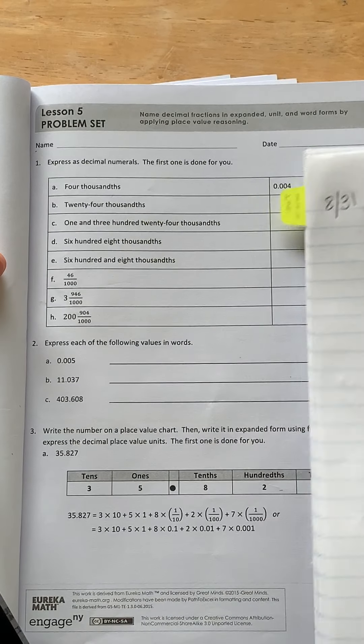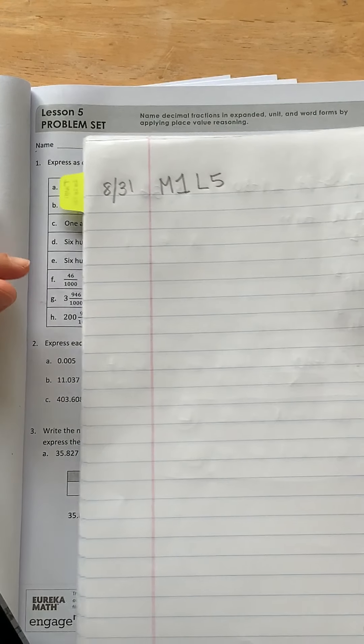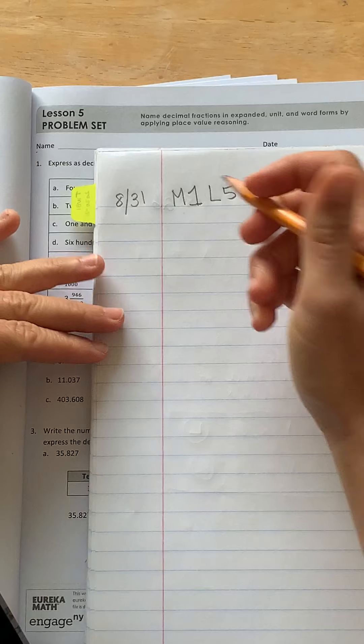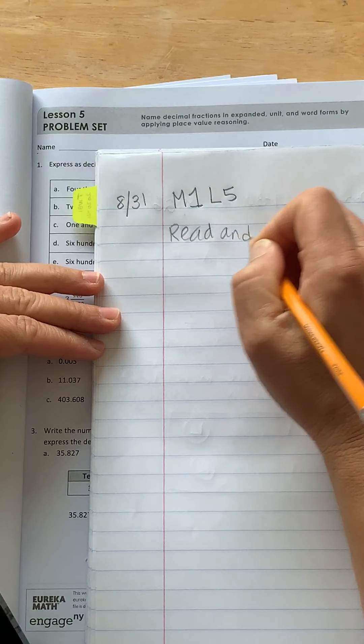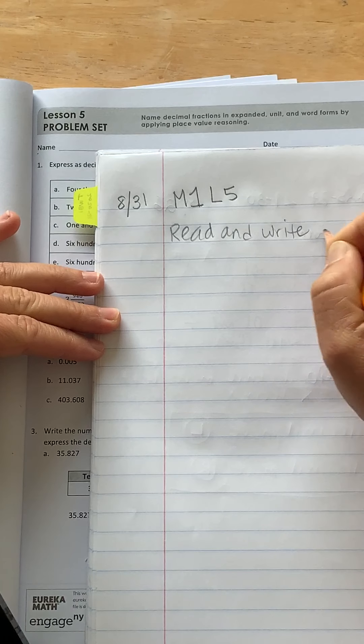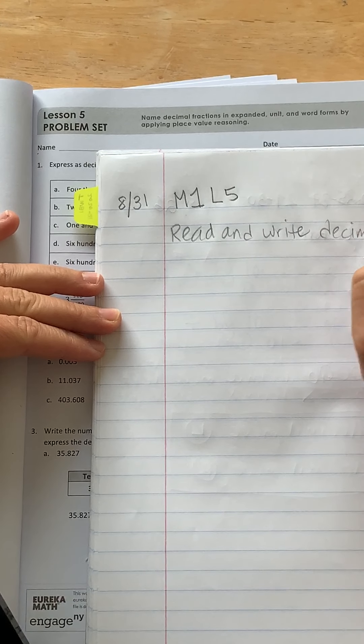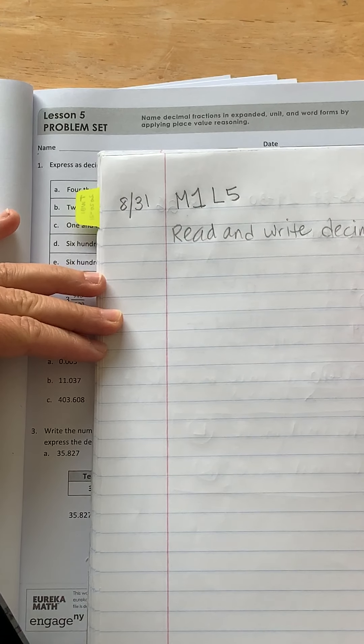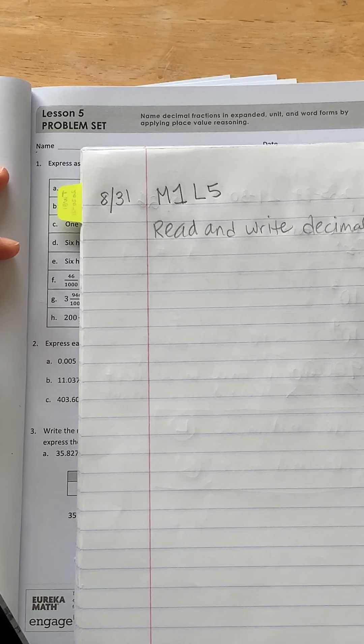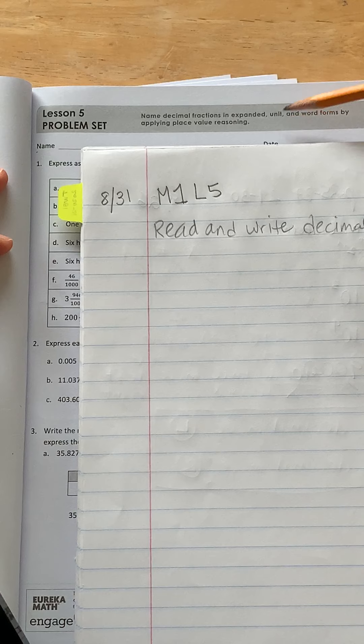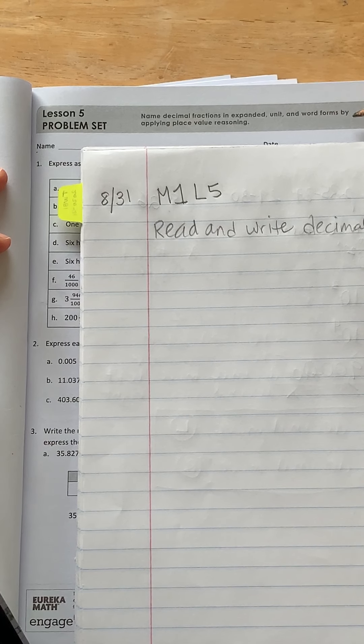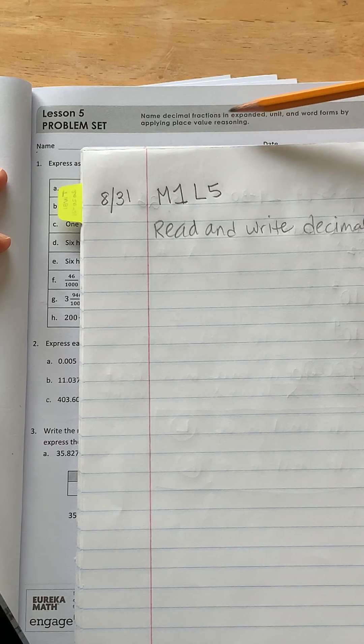So this is a pretty fun, easy lesson. And the objective is that we are going to learn how to read and write decimal numbers. I'm going to abbreviate. Okay, let's read the objective. Name decimal fractions in expanded unit and word forms by applying place value reasoning.